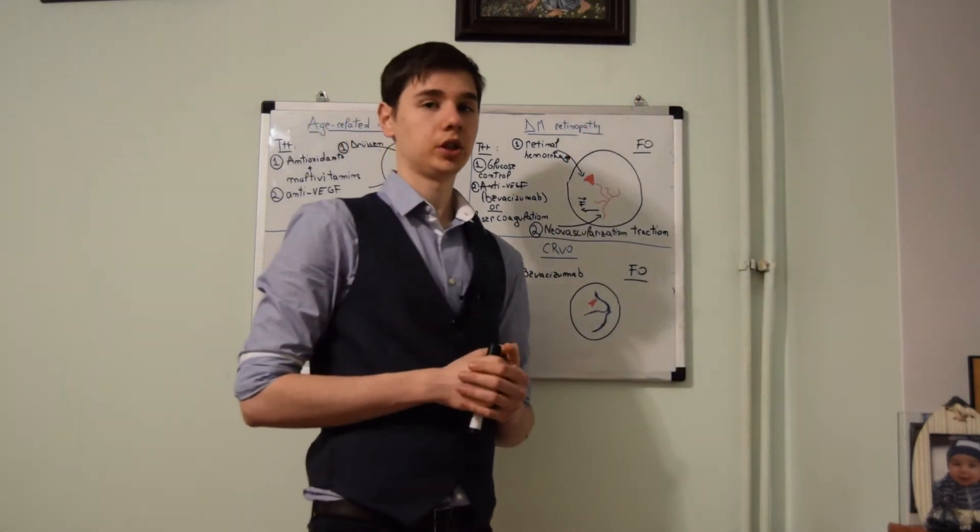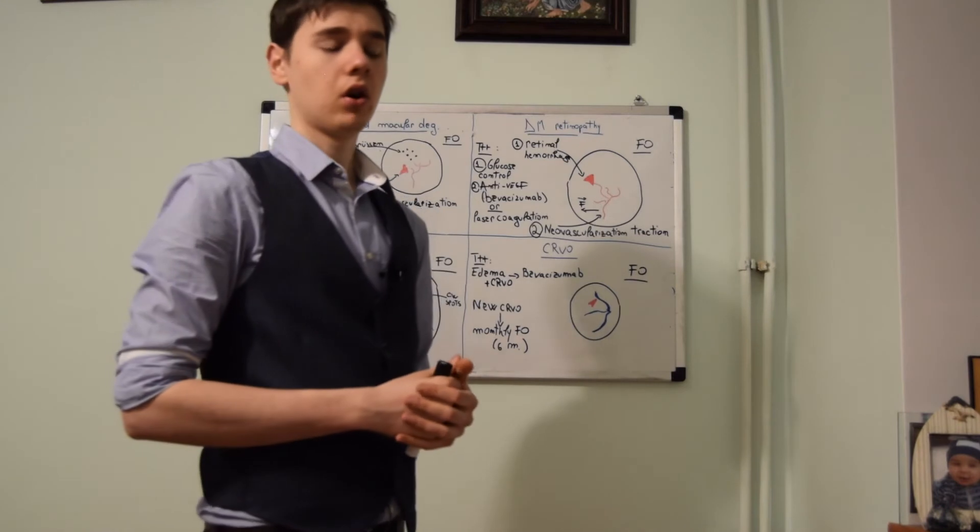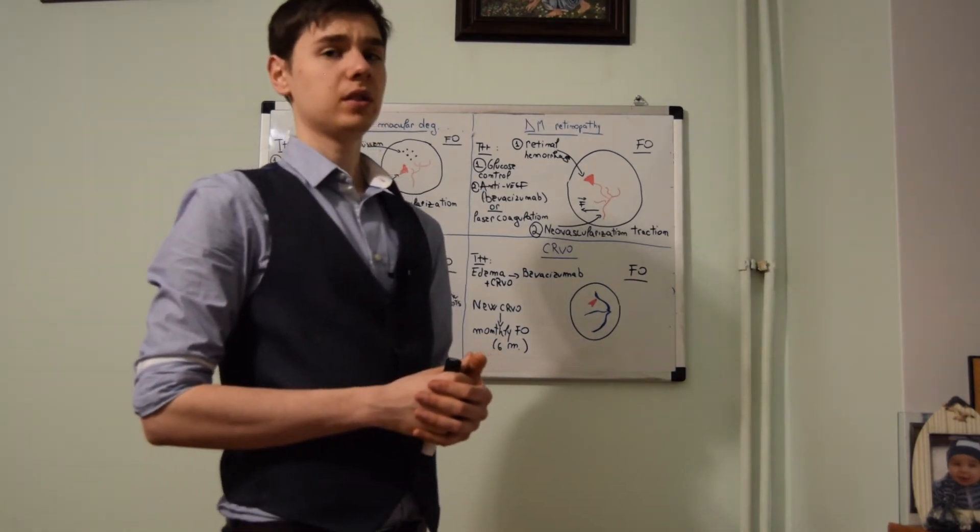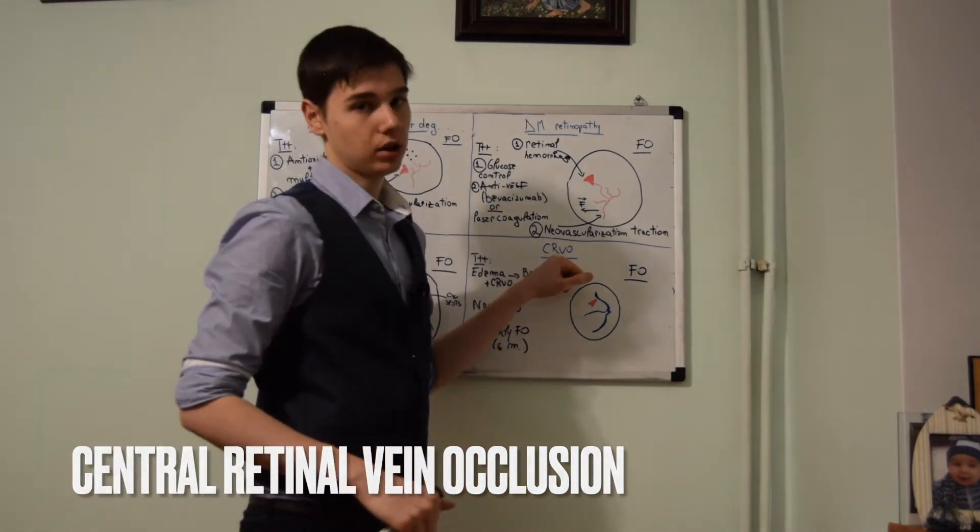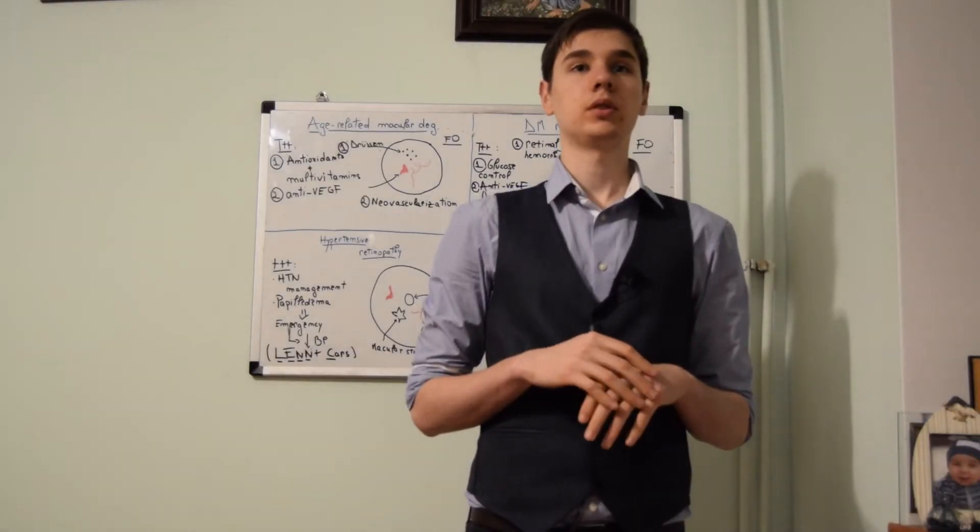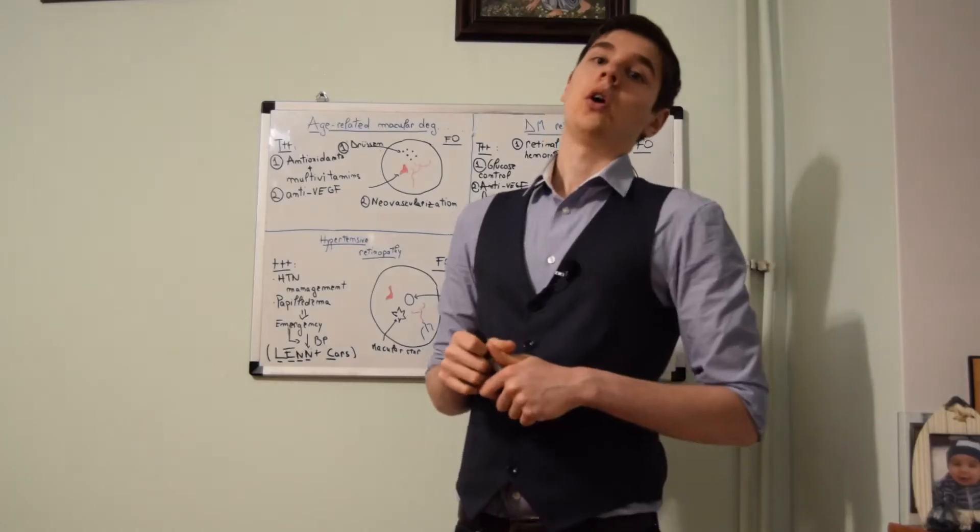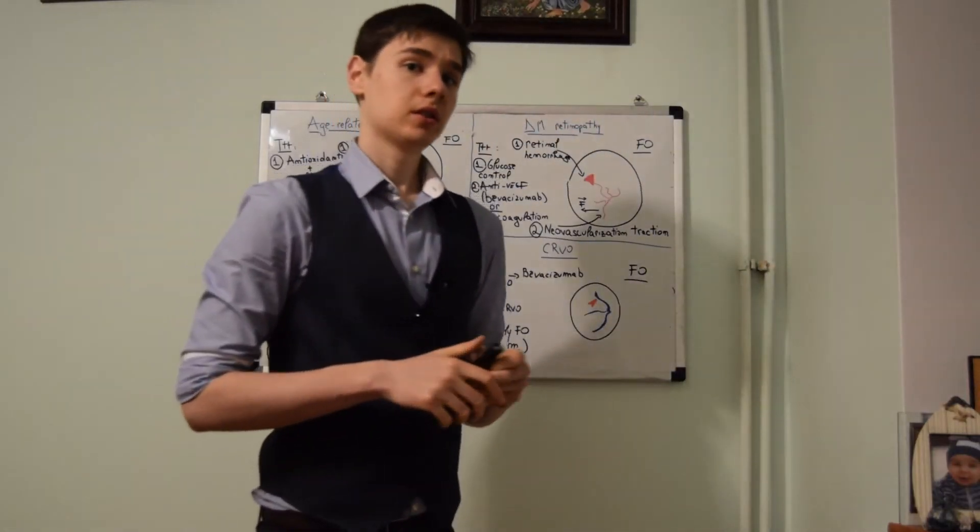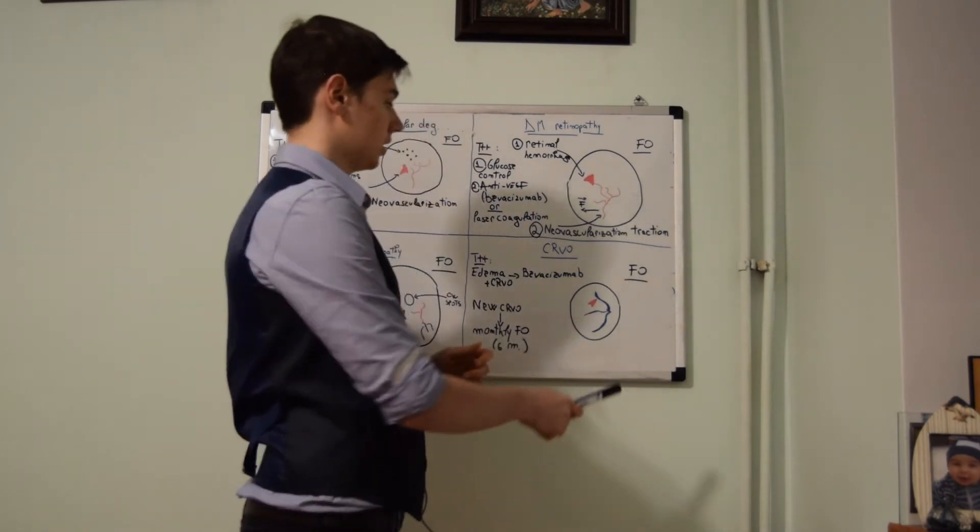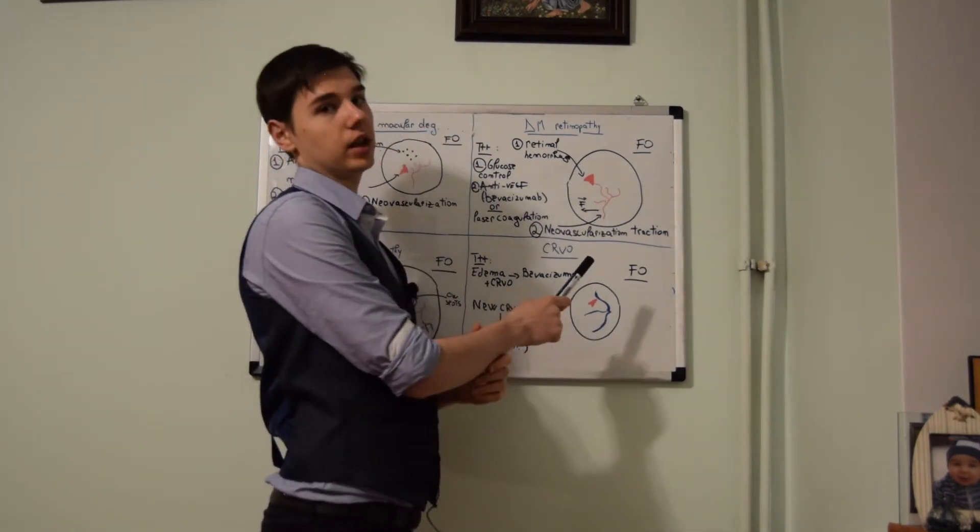Another ophthalmologic pathology frequently seen on the NBMEs is the central retinal vein occlusion. The most important finding to remember is blood and thunder. On the fundoscopic images, we will see venous engorgement and retinal hemorrhages.